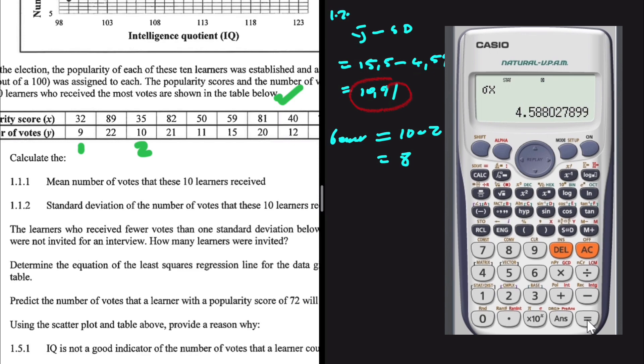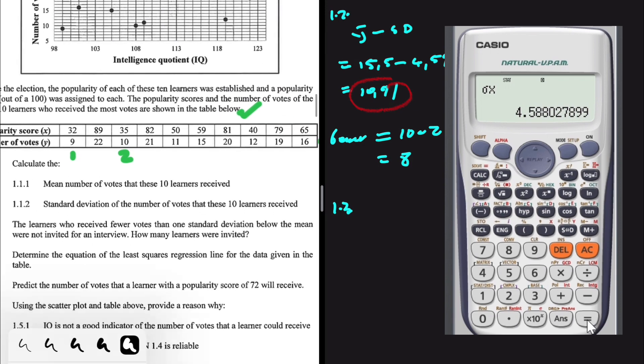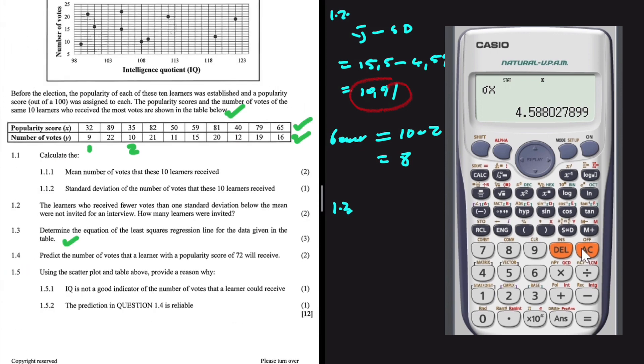Let's take a look at 1.3. In 1.3, we're supposed to determine the equation of the least squares regression line for the data given in the table. How are we going to do that? AC, mode 3 for stats, and now we're interested in two variables. So that is option 2, a plus bx, which is the equation of our least squares regression line. And y is equals to a plus bx. So let's go ahead and press 2 and enter our data.